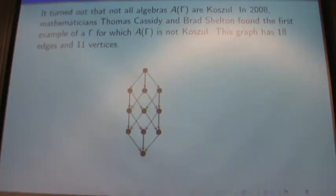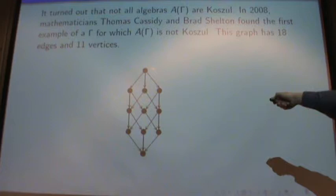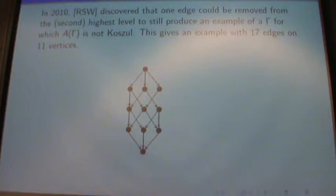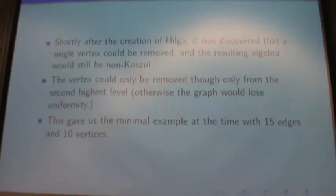And this is the result I want to talk about today. When these algebras A gamma were first discovered long ago, the following conjecture was made. It was thought that for every uniform graph, the algebra A gamma was causal. So it had that causal property. And it turned out that in 2008 there was a surprise. Mathematicians Tom Cassidy and Brad Shelton found the first example of a gamma for which A gamma is not causal. It has 18 edges and 11 vertices. And I'm going to call this the Cassidy-Shelton graph or Cassidy-Shelton-Poset, depending on what word I choose to use. And it wasn't until 2010 Retox, Erconic, and Wilson realized you could remove an edge and the resulting graph would still not be causal. But it's uniform and everything else has all the other properties it needs. And this gave us an example with 17 edges and 11 vertices.